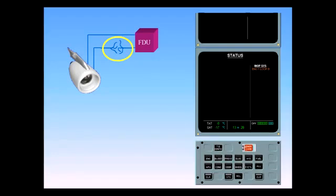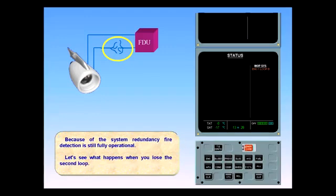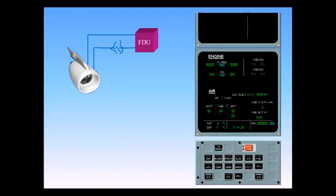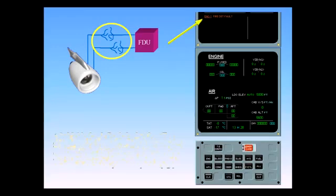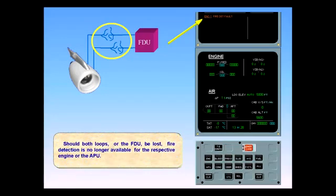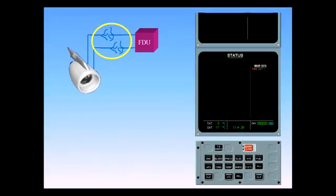Let's see what happens when you lose the second loop. Should both loops or the FDU be lost, fire detection is no longer available for the respective engine or the APU. Crew awareness and a close monitoring of the respective engine indications are now required. However, should both loops break within a five-second period, a valid fire warning is triggered.